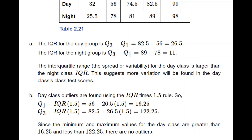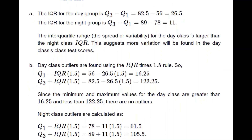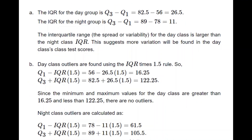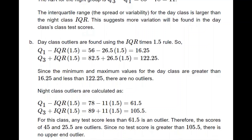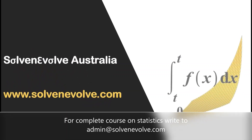However, for the night class, Q1 minus 1.5×IQR turns out to be 61.5, and Q3 plus 1.5×IQR turns out to be 105.5. There is no score greater than 105.5, so there is no upper outlier. However, two scores — 45 and 25.5 — are below 61.5, making them outliers in this data set.